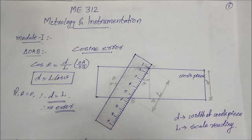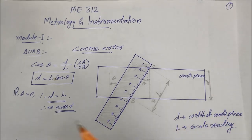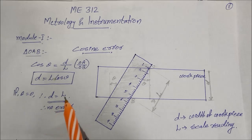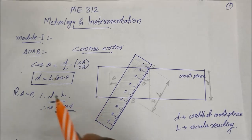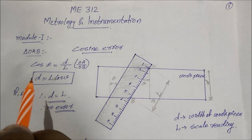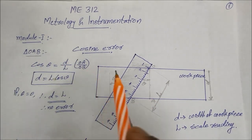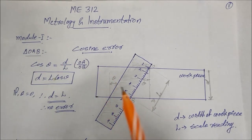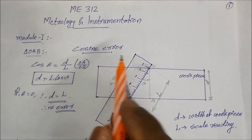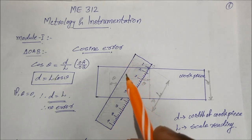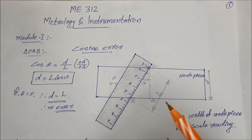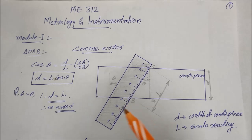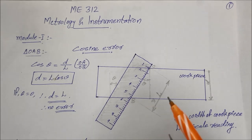Now we will discuss the points of the first module. The first module is about measurements. The first error I will discuss is the cosine error. Cosine error means a type of measurement error that is created.